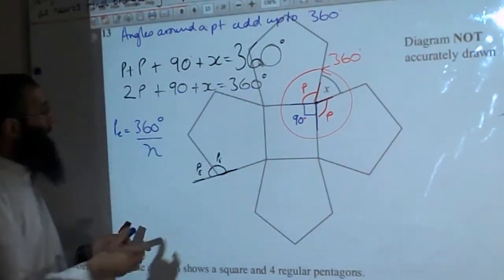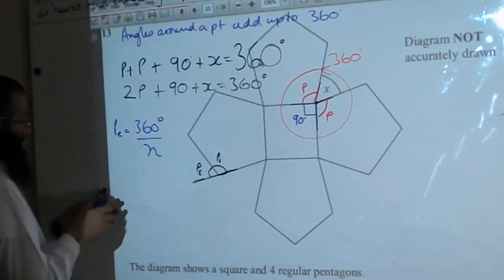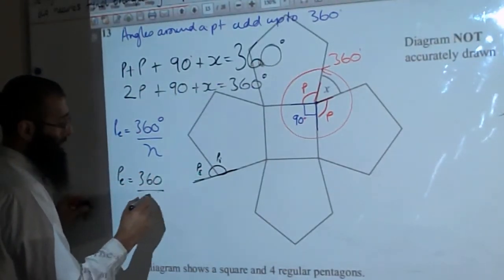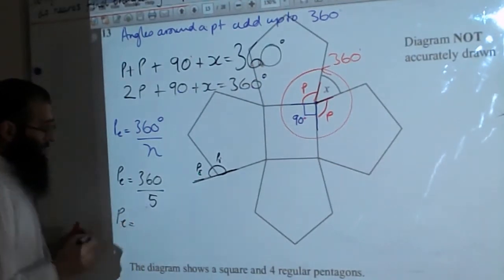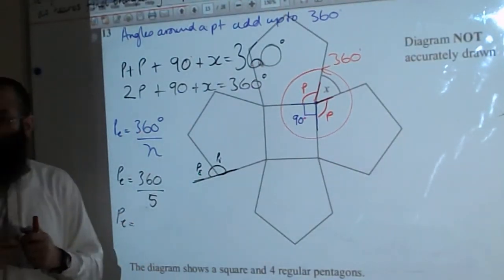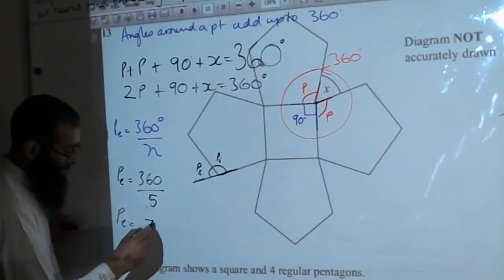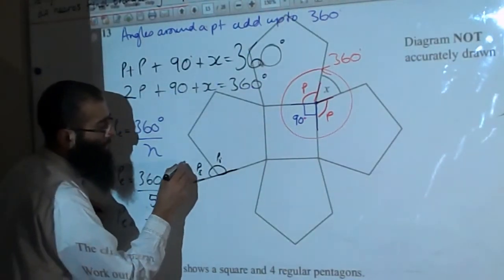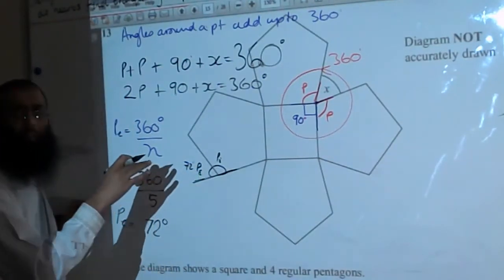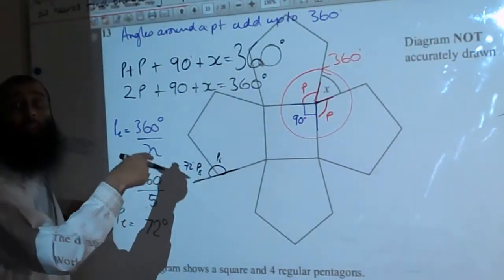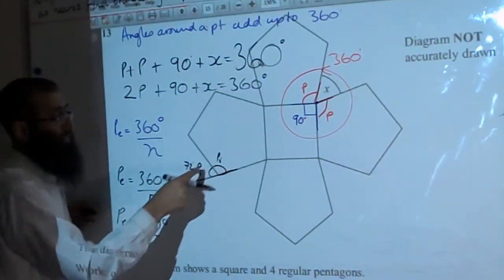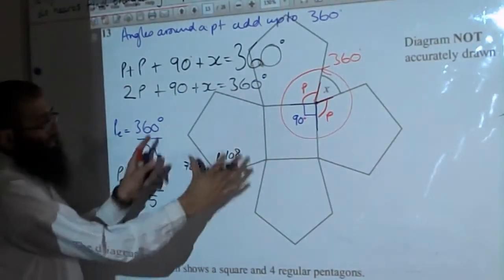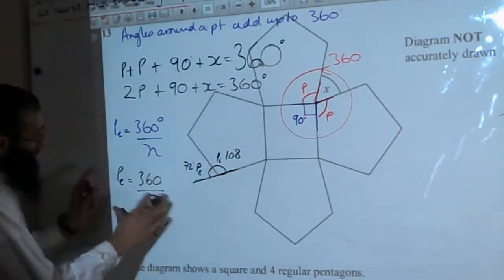So the external angle of the pentagon equals 360 divided by 5, which is 72 degrees. If the outside one is 72, the inside one must add with it to make 180. So the internal angle is 108 degrees.